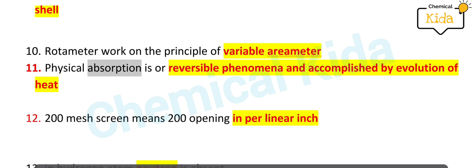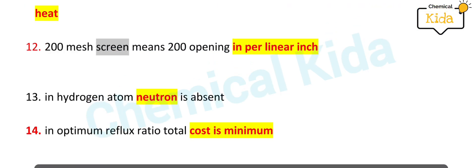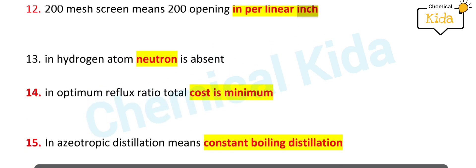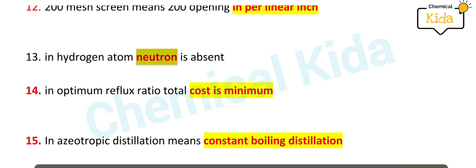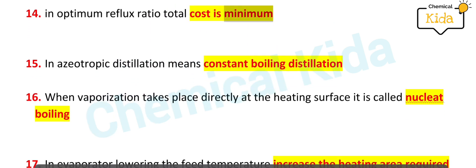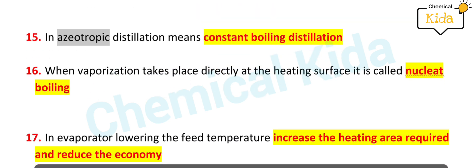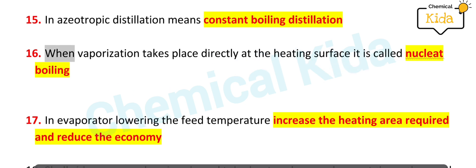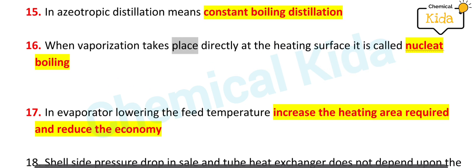Physical absorption is a reversible phenomena and accomplished by evolution of heat. 200 mesh screen means 200 openings per linear inch. In hydrogen atom, neutron is absent. In optimum reflux ratio, total cost is minimum.